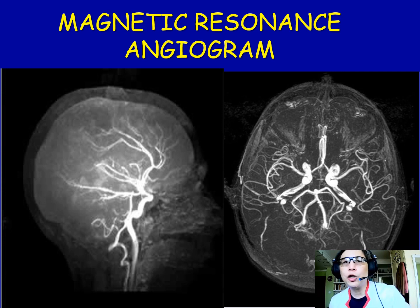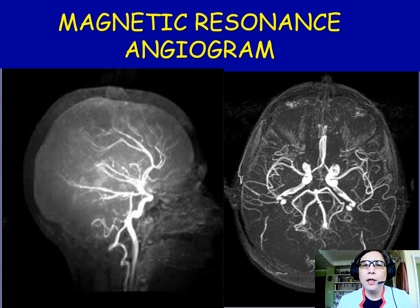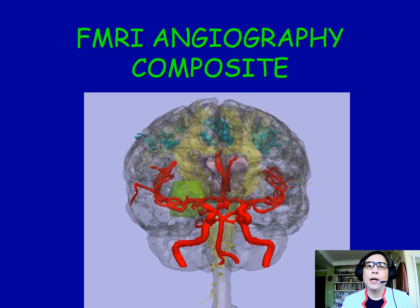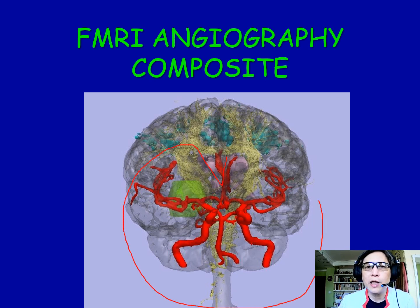The magnetic resonance angiogram came ahead of the CT angiogram, and it also produces a very clear picture, but the bone reconstruction is not as good as the CT angiogram. You can now do a composite of functional MRI and angiography, where you see the blood vessels in red and also the white matter tracts.